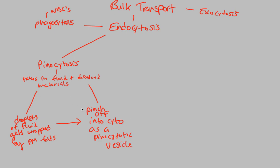The key distinction to understand between phagocytosis and pinocytosis is that phagocytosis is cell eating, and pinocytosis is cell drinking. They are both forms of endocytosis, and they both involve ATP because they are bulk transport — involving large molecules being transported into the cell, since 'endo' means into or inside.